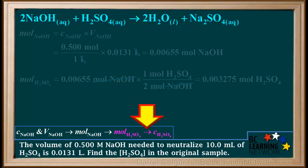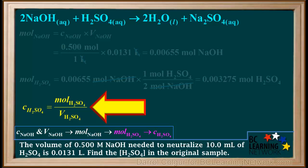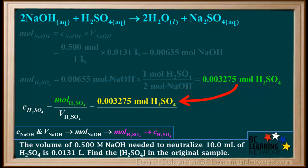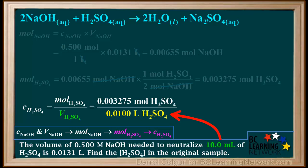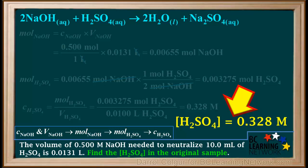The last step is to calculate the concentration of H₂SO₄. Concentration equals moles of H₂SO₄ divided by volume of H₂SO₄ in liters: 0.003275 moles divided by 0.0100 liters, giving 0.328 molar. This is expressed to three significant figures, consistent with the data given. So the final answer is that the concentration of H₂SO₄ in the original sample was 0.328 molar.